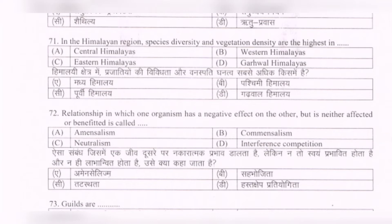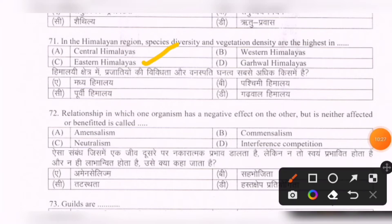Next question: In the Himalayan region, species diversity and vegetation density are the highest in — options are: central Himalayas, western Himalayas, eastern Himalayas, Garhwal Himalayas. The correct option is eastern Himalayas.